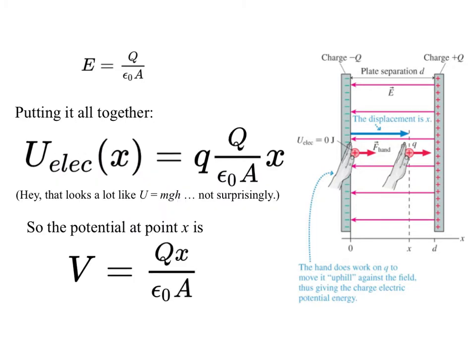Wrapping all of that up and together, we can say, taking this electric field that we had, that the electric potential energy at a distance X from the negative plate is little Q times big Q over epsilon naught A times the distance from the plate.